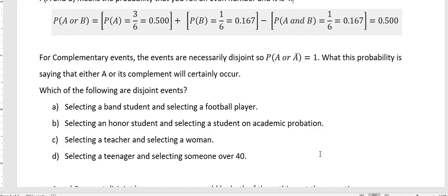What about the second one? Is it possible to be an honors student and at the same time be on academic probation? Probably not. And since those two things cannot happen for the same person simultaneously, then those would be considered to be disjoint.